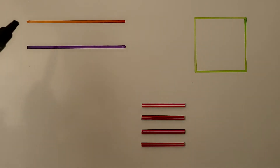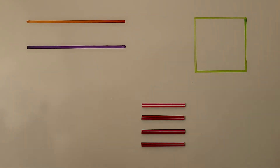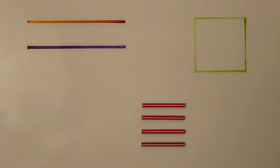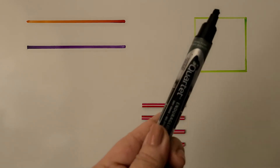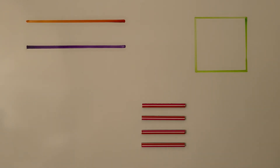When one line is just as long as another line, we say they have equal length. These two lines have equal length. An object's length is how long it is, and equal means the same. The orange line and the purple line have equal length. A square has four sides of equal length — all four sides are the same length.